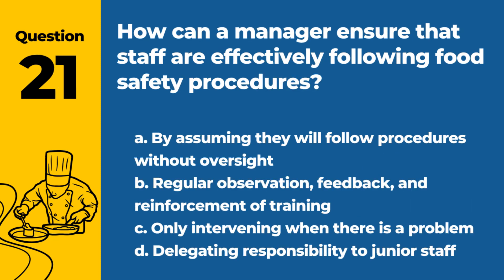Question 21. How can a manager ensure that staff are effectively following food safety procedures? A. By assuming they will follow procedures without oversight. B. Regular observation, feedback, and reinforcement of training. C. Only intervening when there is a problem. D. Delegating responsibility to junior staff. Answer: B. Effective management of staff adherence to food safety procedures involves regular monitoring, providing feedback, and reinforcing training as needed.